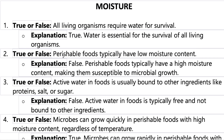Number two: perishable foods typically have low moisture content. This is false — perishable food has high moisture content, because water creates an environment for microbes or living organisms to thrive, making the food perishable.